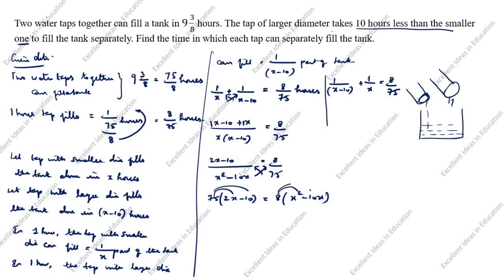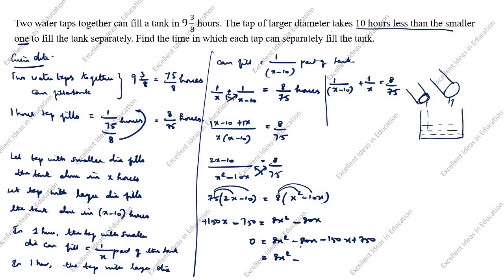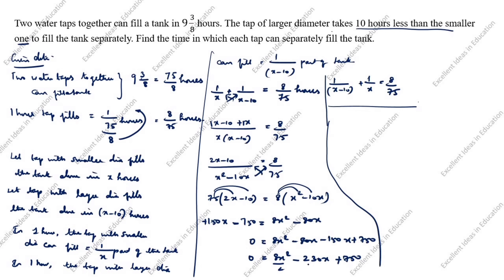Expanding: 75 × 2x = 150x, 75 × 10 = 750, and 8 × x² = 8x², 8 × 10x = 80x. So 150x minus 750 = 8x² minus 80x. Rearranging: 8x² minus 80x minus 150x + 750 = 0, giving 8x² minus 230x + 750 = 0. Dividing by 2: 4x² minus 115x + 375 = 0.